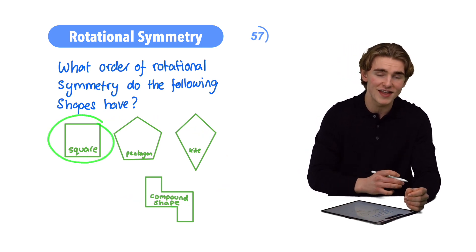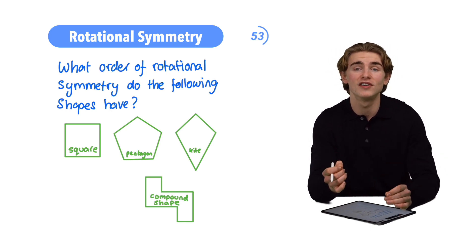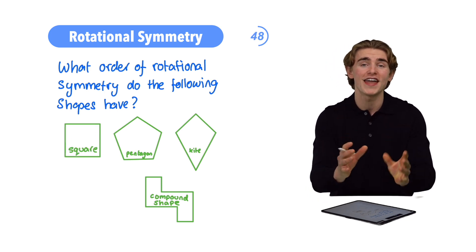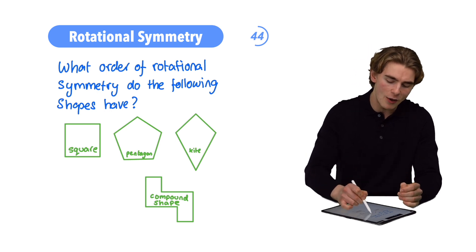So first off, our square. We would say that a square has rotational symmetry of order four, and that's because there are going to be four different rotations, one, two, three, and four, which look exactly the same when we rotate the shape around the center point.